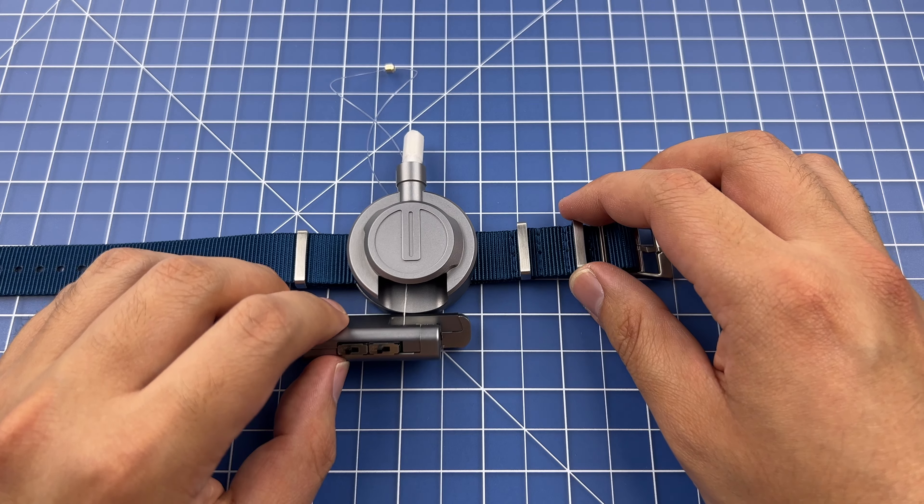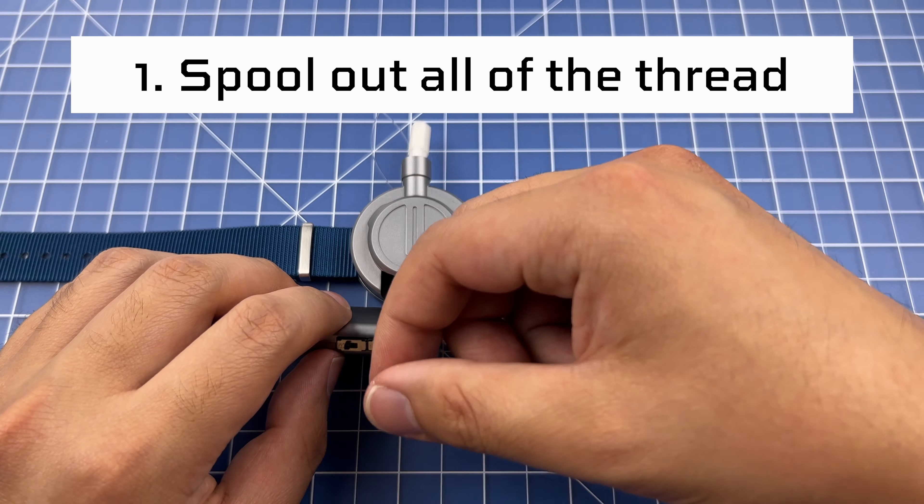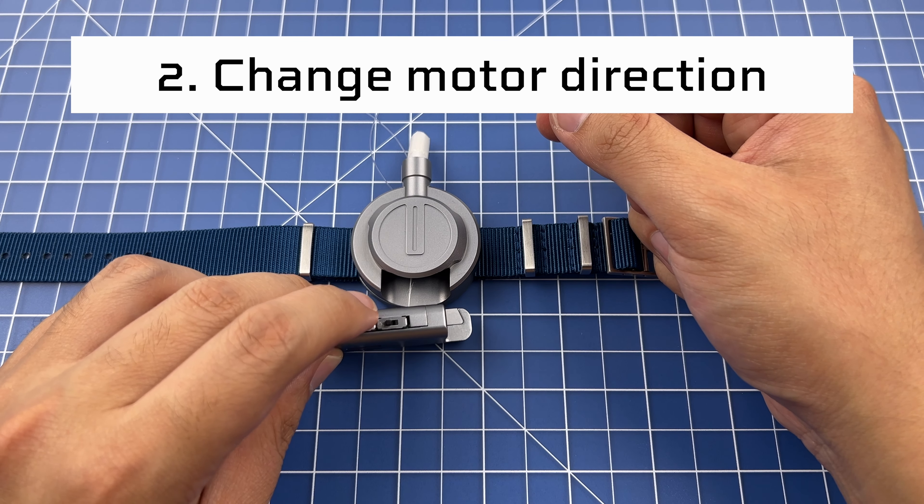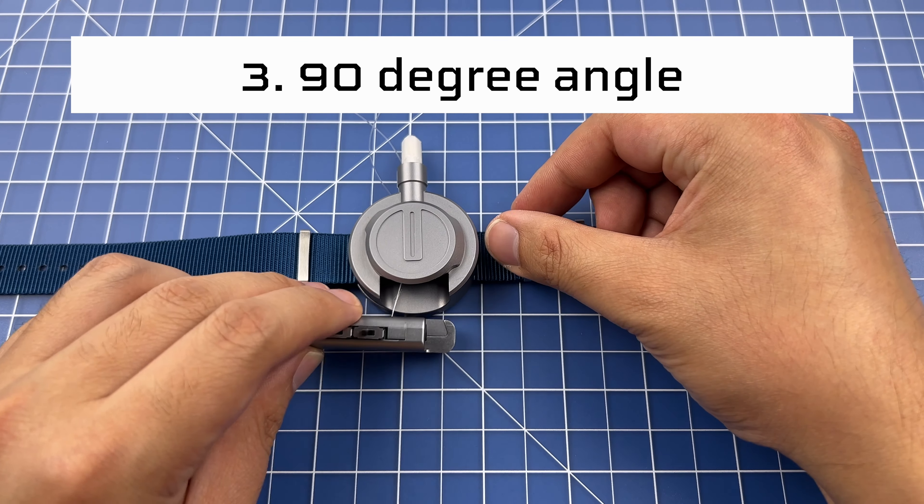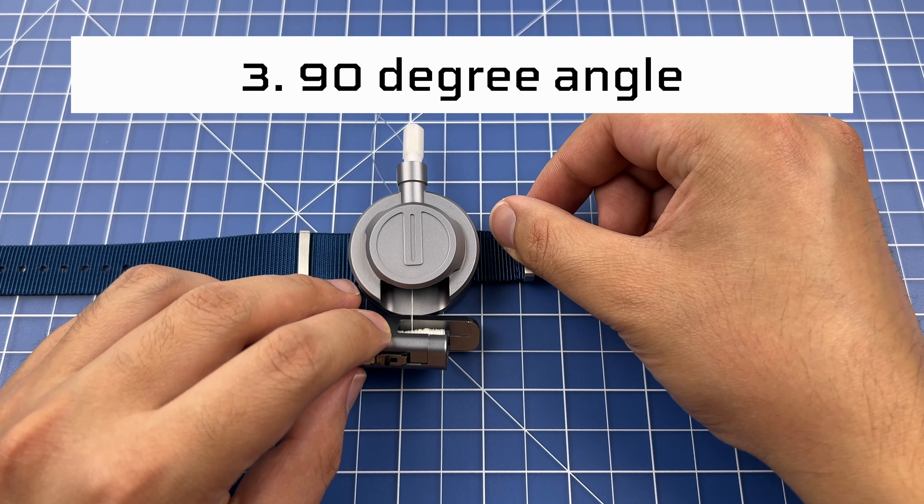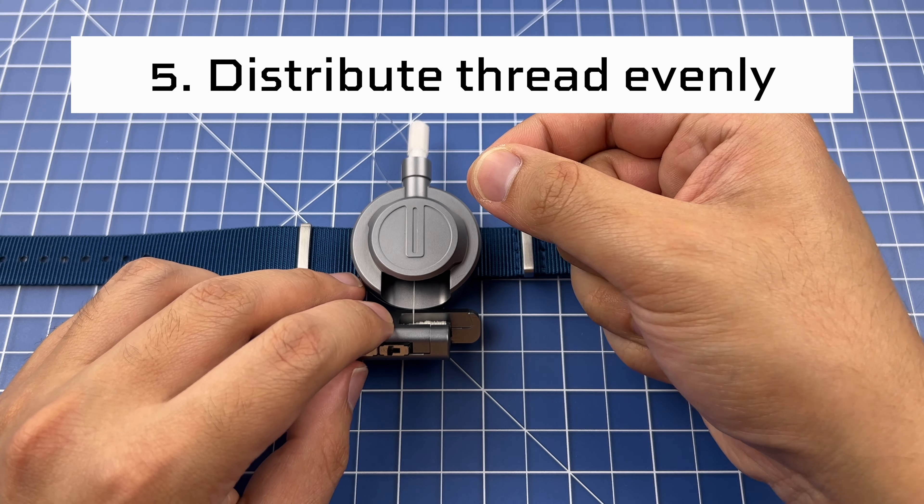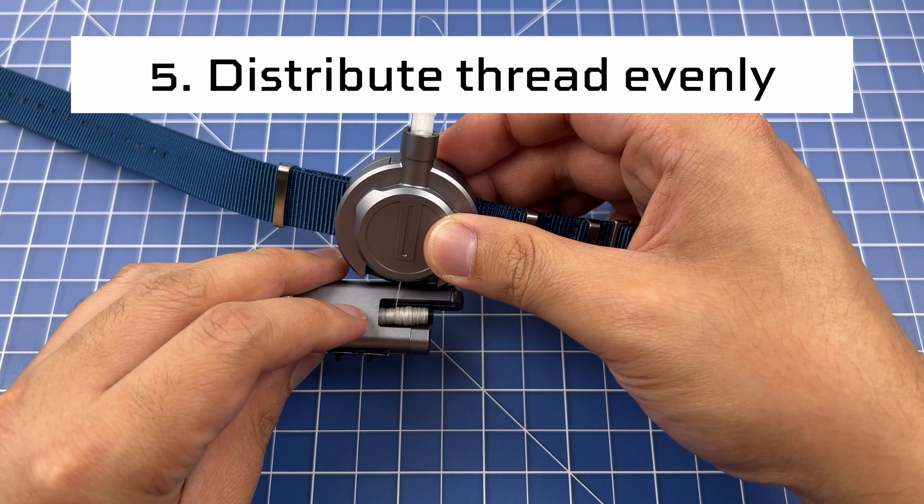So far we have five rules for reloading. First, spool out all of the thread. Second, change the direction of the motor. Third, maintain a 90 degree angle when reloading. Fourth, apply tension to the line when it's coming back in. And fifth, make sure that the line loads onto the spool evenly.